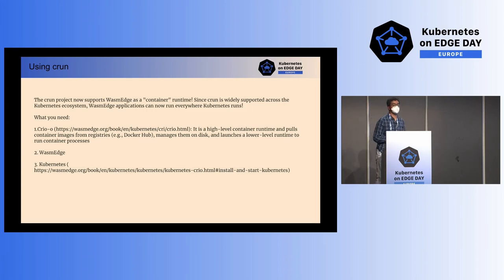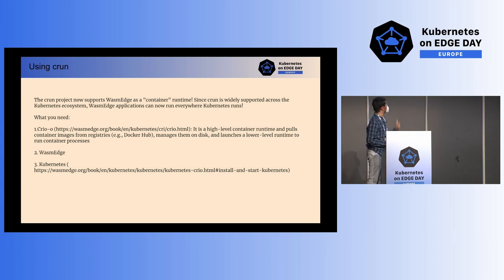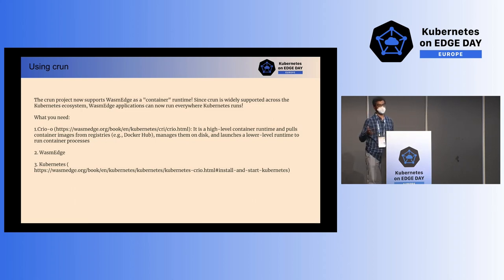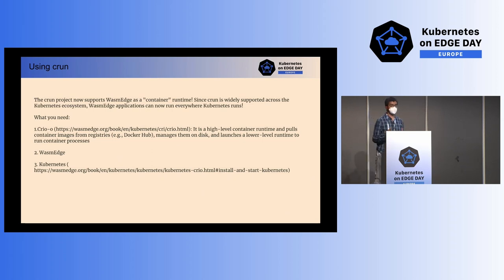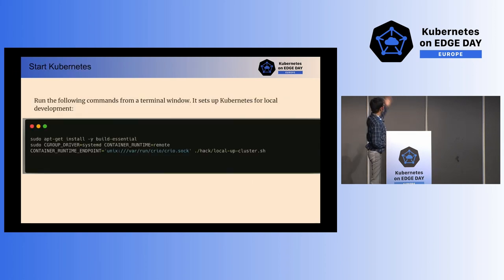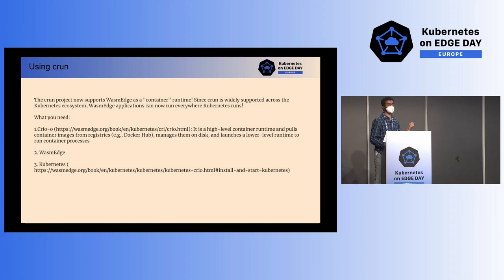Now let's cover how you can actually get started. There are some prerequisites — you'll need to install Rust and Kubernetes, and also some other tools including CRI-O, which is a high-level container runtime that pulls images from Docker Hub, and WasmEdge, which you can install very easily by going to github.com/WasmEdge/WasmEdge. It's very easy to set up, especially on a Linux-based system. Once you have installed all of these, we'll cover the steps to set up and run a WASI image application inside your Kubernetes pod.